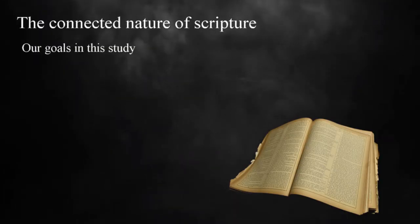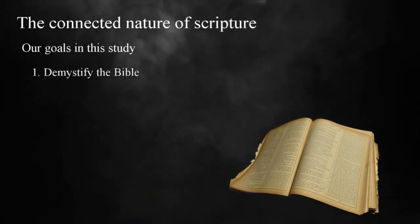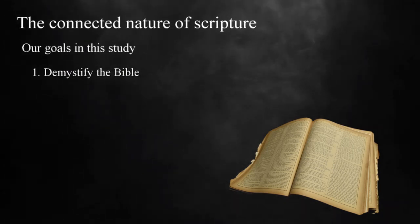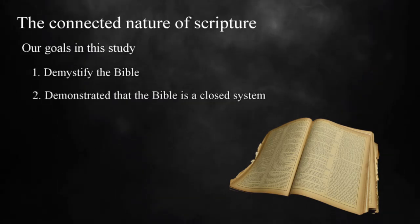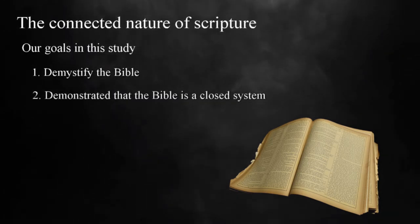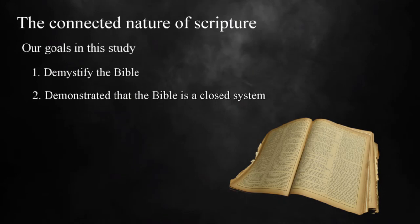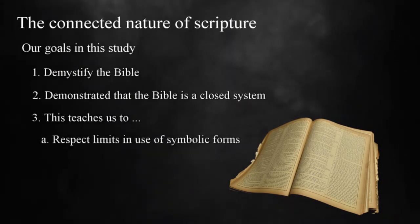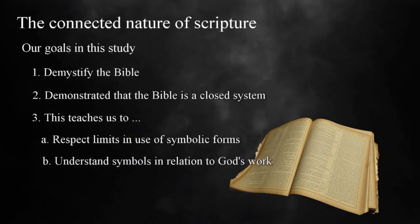In our study of biblical symbolism, we've had two goals. The first is to demystify the Bible and demonstrate that symbolic forms were given meaning because of how God used them. Secondly, we've focused on the context of these figures and found that the Bible is a closed system, meaning that we can't extract symbolic forms and apply them outside the scriptural text. The combination of these two things teaches us to respect limits in our use of symbolic forms and emphasizes the need to understand them in relation to God's work.